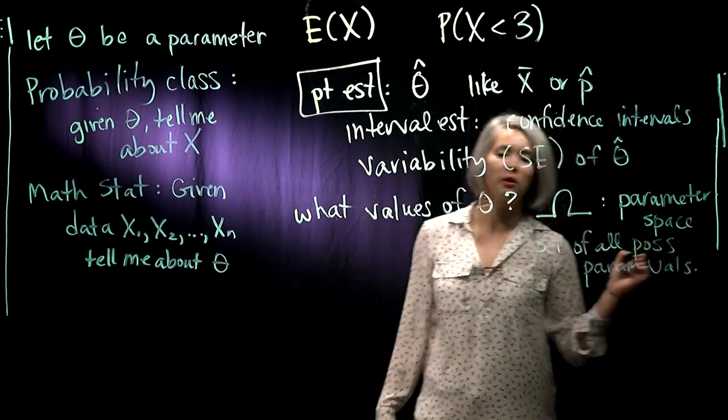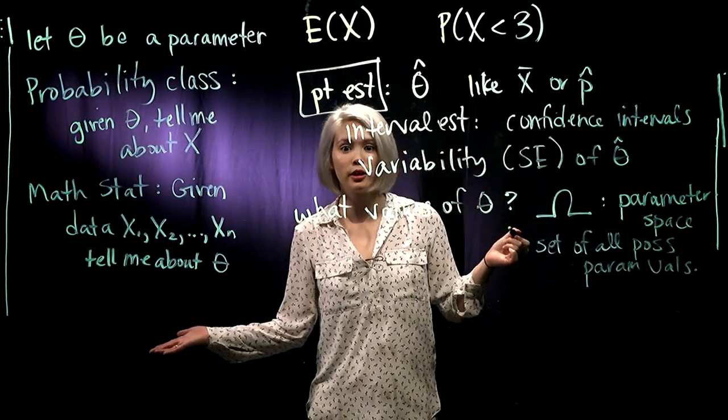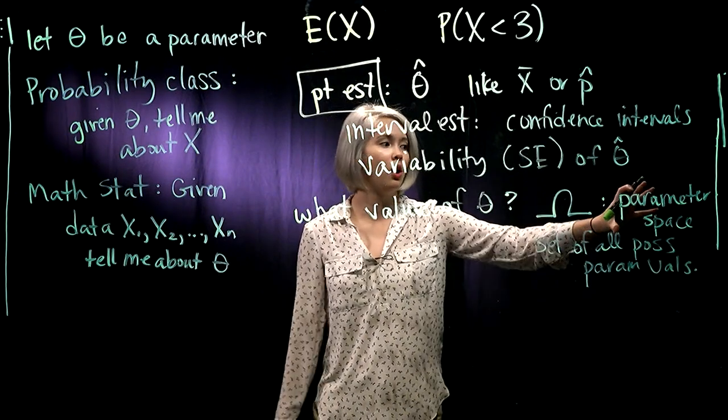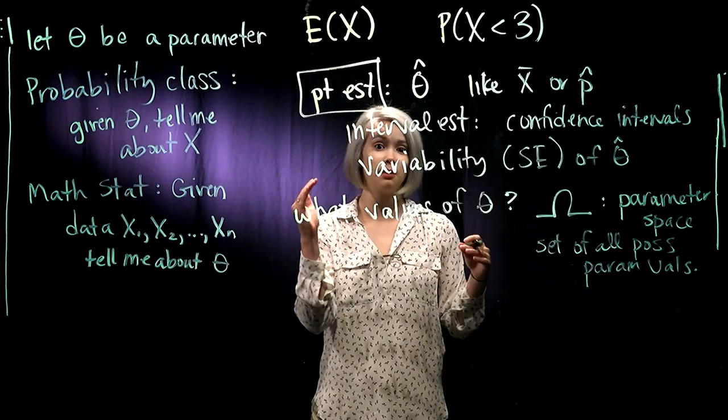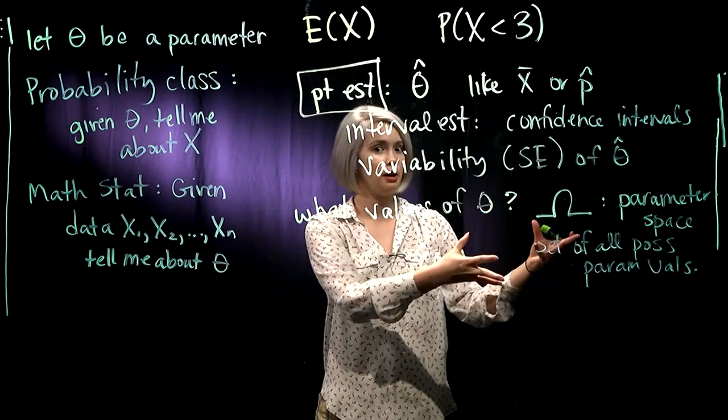This is important because we don't want to be guessing negative numbers for variance or something like that. We want to know what are all the possible values that our parameter could take on. Then we're going to try to get a point estimate that's in that parameter space.